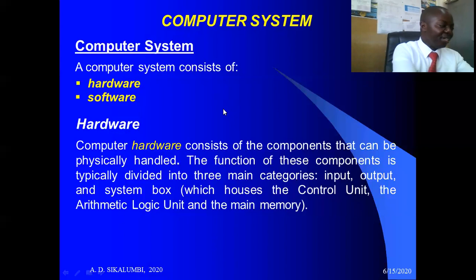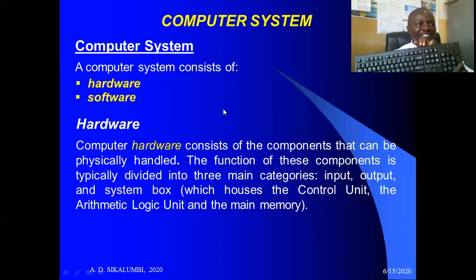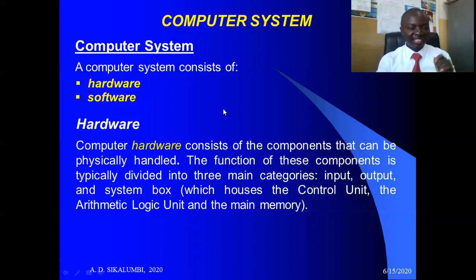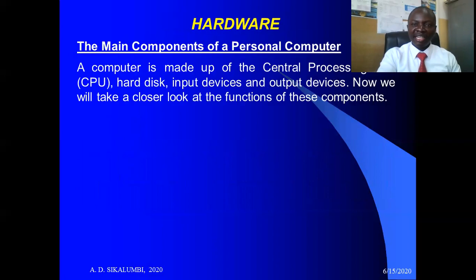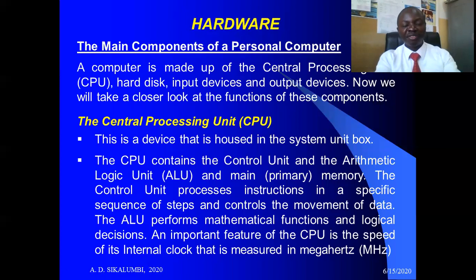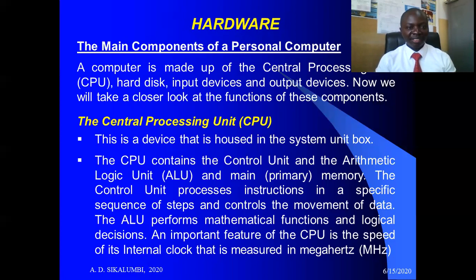Input activities involve putting information into the system — for example, keying in information using the keyboard, or recording. Typing is an input activity, among others. Outputs include reporting and communicating — those are output activities. The main components of the personal computer include the central processing unit, the hard disk where information is stored, as well as input and output devices, which we are going to look at in closer detail in this presentation.